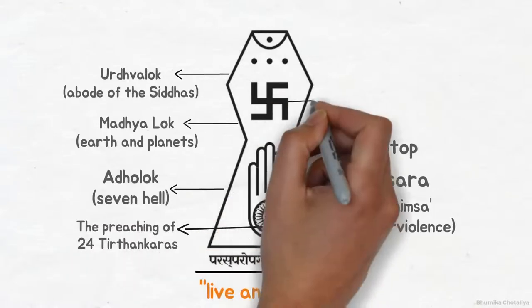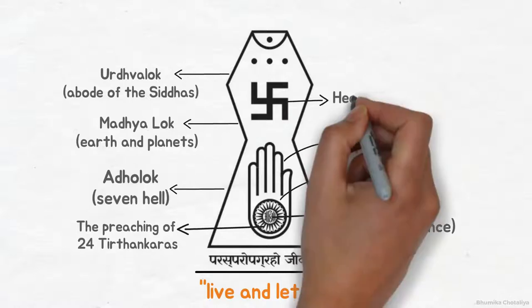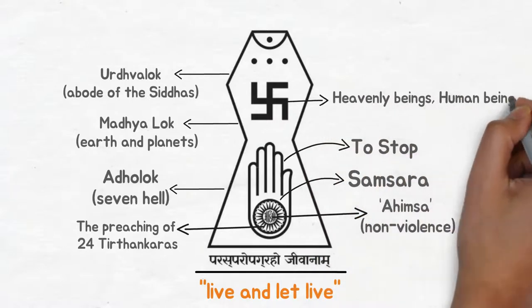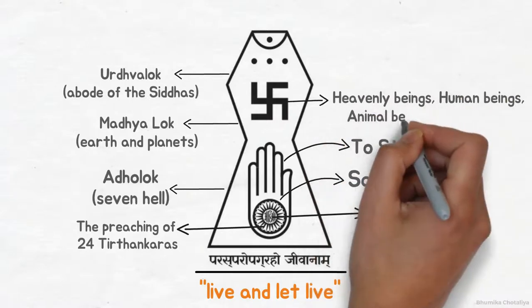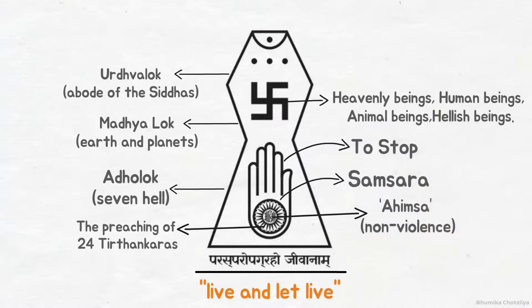The four arms of the swastika remind us that during the cycle of birth and death, we may be born into any one of the four destinies: heavenly being, human being, animal being, and hellish being.